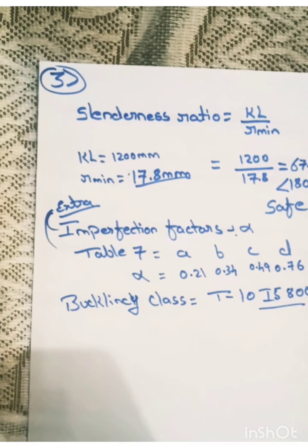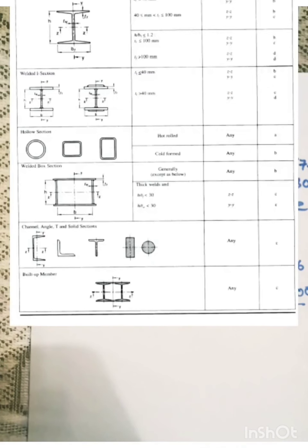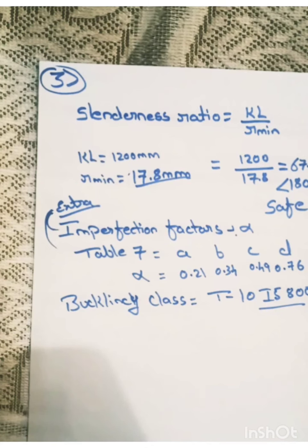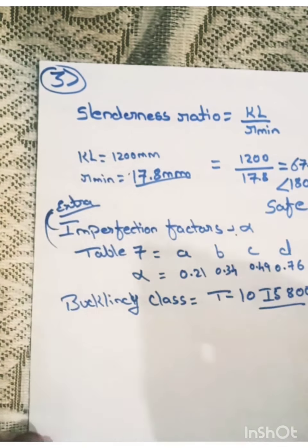For angles and for built up sections. Here you can see in built up sections along any axis, it is C. So for built up sections and for channels, it is C. For I sections, for I sections, we need to check along both xx axis and about yy axis. We need to find the value of FCD along both. First, we need to find the value of FCD along the xx axis taking buckling class as A, along yy axis taking buckling class as B. Only for I sections. For angles, it is C.